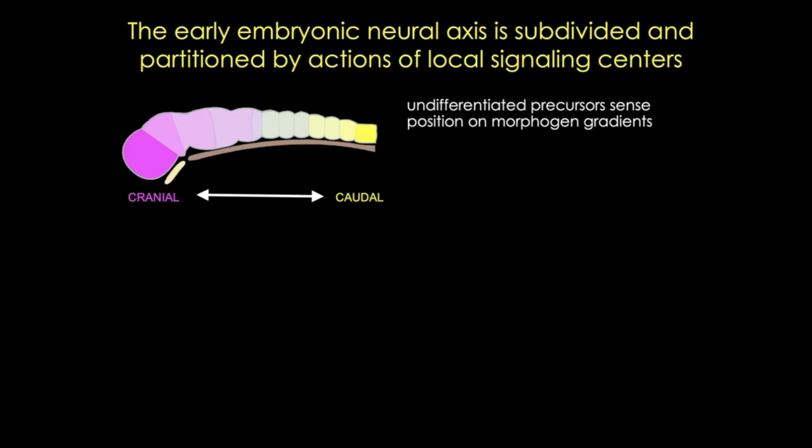Cells in the cranial region are in the highest concentration of the pink morphogen and the lowest concentration of the yellow morphogen, and they'll become cells in the forebrain. Cells in this other region have high yellow but low pink morphogen concentration, and they'll become cells in the hindbrain. Different combinations of signals will activate or suppress various genetic pathways, driving different fates. This first set of morphogens sets up initial boundaries that will later be refined by more signals.